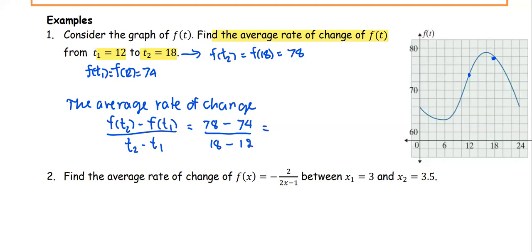Simplifying: the numerator gives us 4, the denominator gives us 6, and the numbers simplify one more time to be 2 over 3. So 2 thirds is the average rate of change of the function f(t).